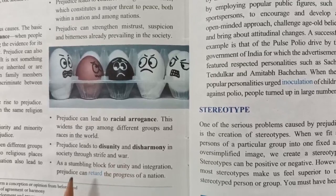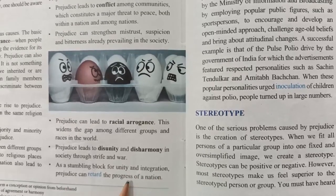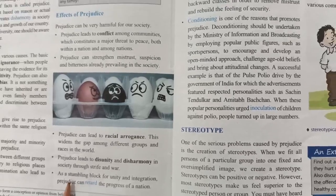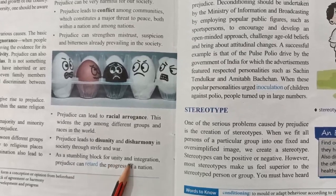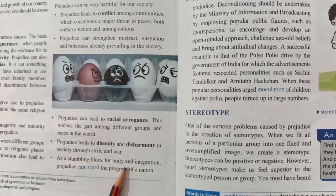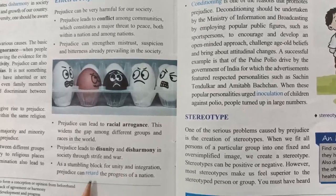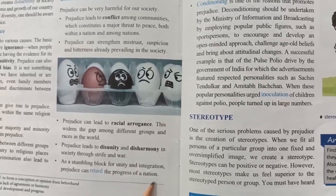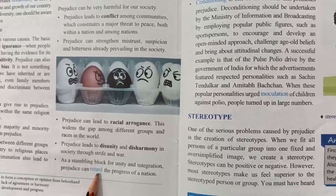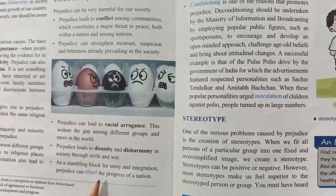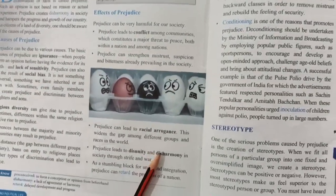Prejudice acts as a stumbling block for unity and integration, and prejudice can retard the progress of a nation. A country's unity and integration will stumble — which means it will fall — and the nation's progress will be retarded, meaning it will delay the development and progress of a nation. These were the effects of how prejudice is harmful to our society.